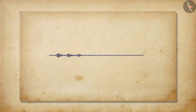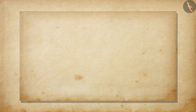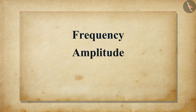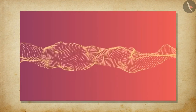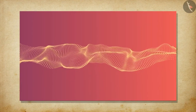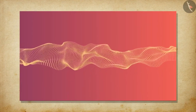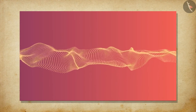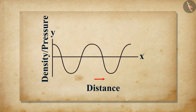Now let us understand the characteristics of a sound wave. A sound wave can be described with the help of its frequency, amplitude, and speed. Have a look at these images of a sound wave. It shows the variation in density and pressure of a sound wave at a given time with distance.